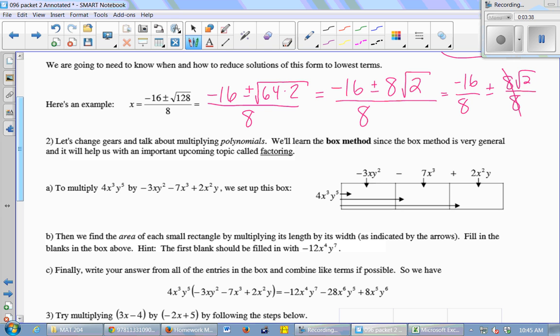I want to multiply 4x cubed y to the 5th by this long polynomial here, negative 3xy squared minus 7x cubed plus 2x squared y. So I want to multiply those two things together. So I set up some boxes. And I'm going to have my 4x cubed y to the 5th along my width of the box, and then my other factor, this whole big long thing, is going to go along the length of the box. And for each term that's separated by an addition sign or a subtraction sign, you put a line in the box. So I have three small boxes here.